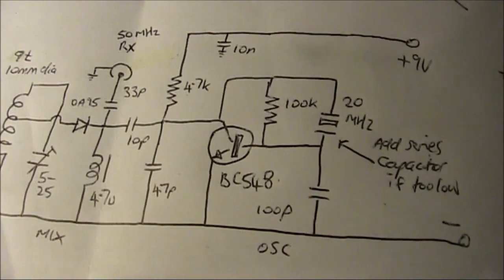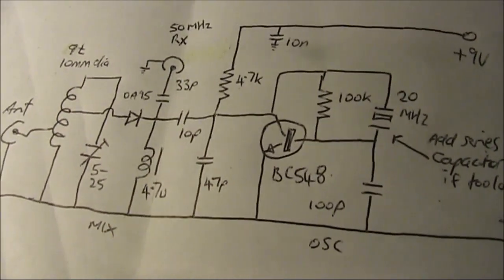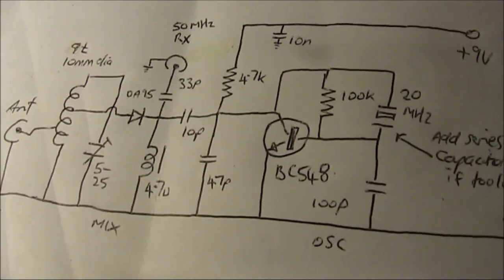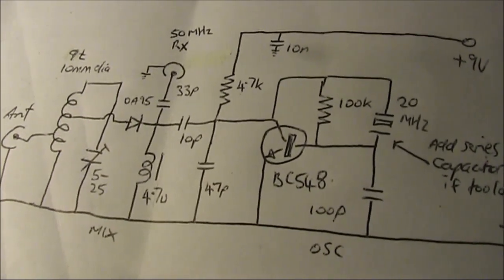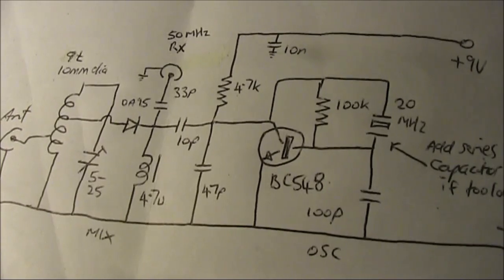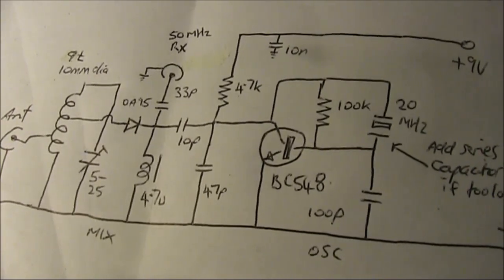The output from the crystal oscillator goes into the diode mixer stage. It's actually at that same point that you've also got the output from the converter going into your 50MHz receiver.